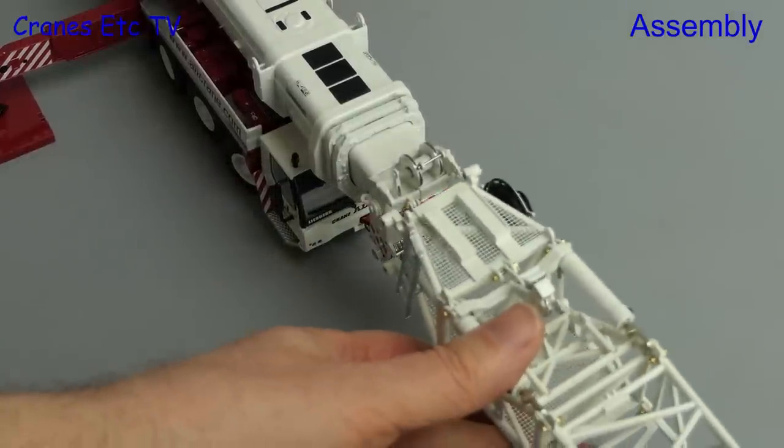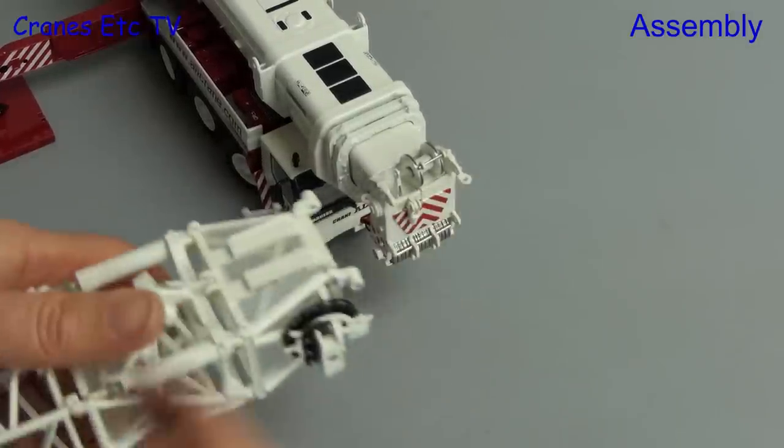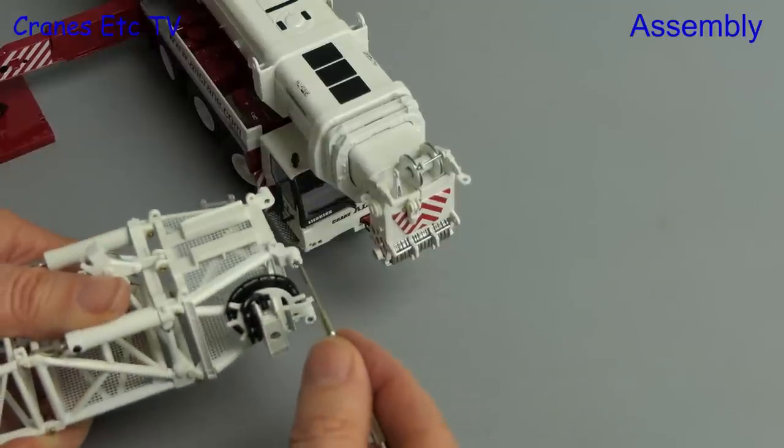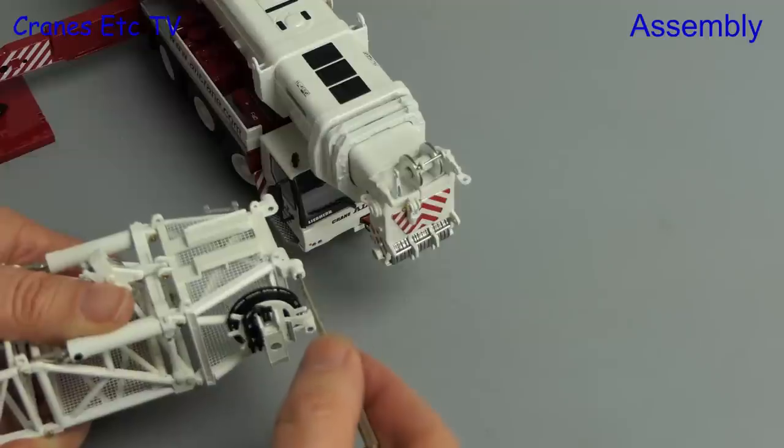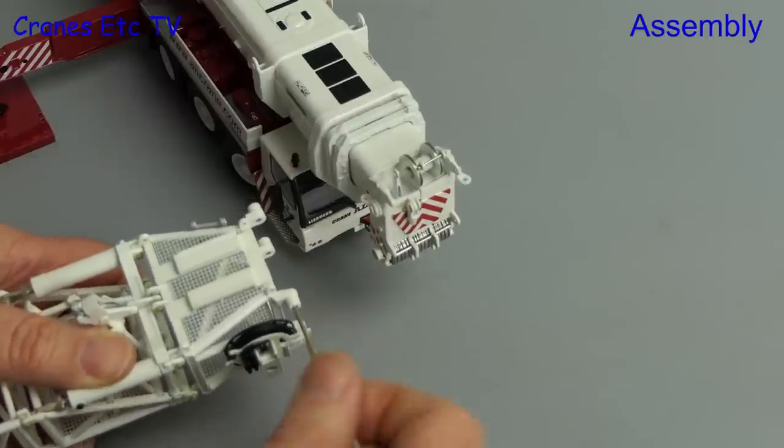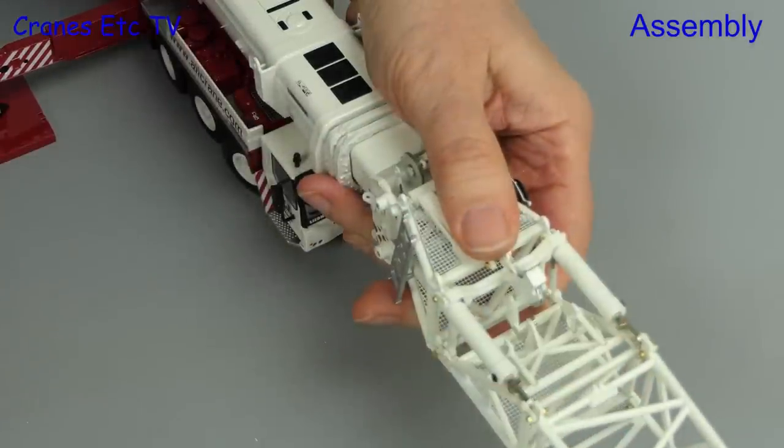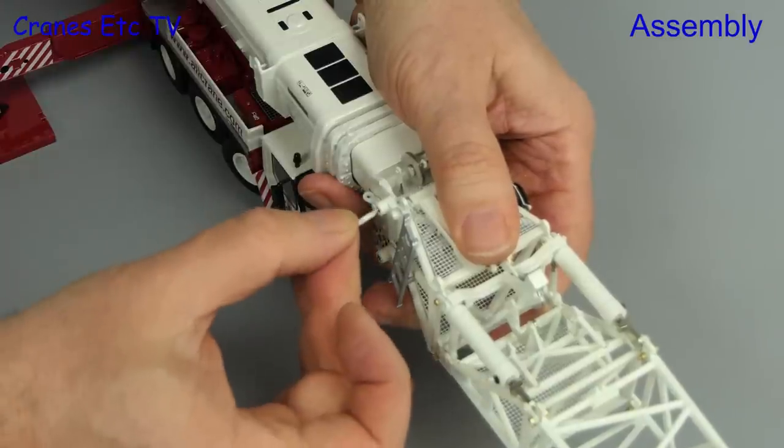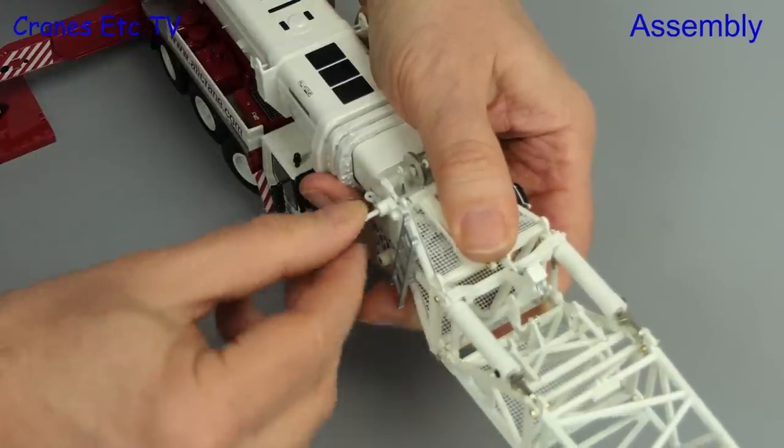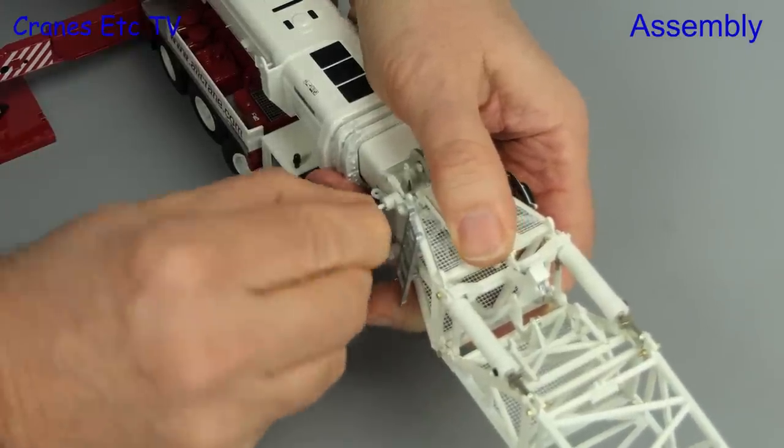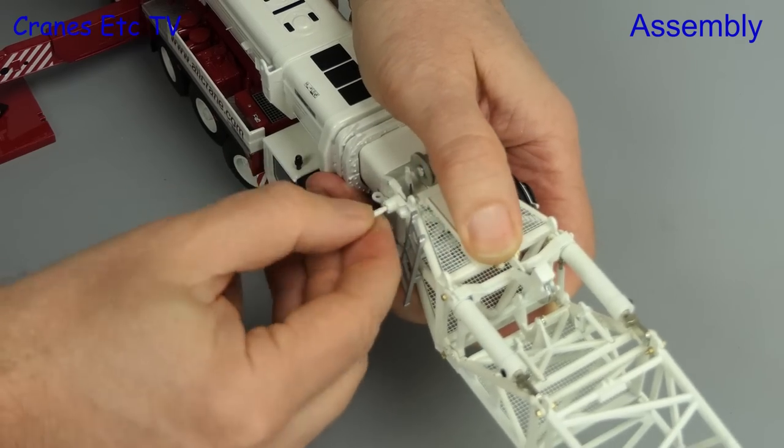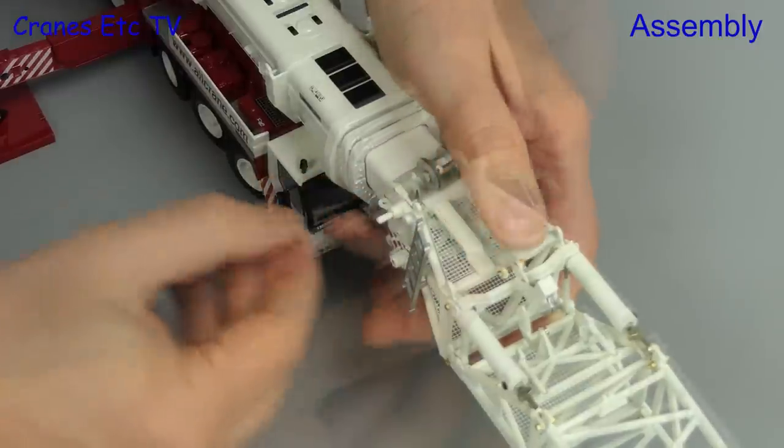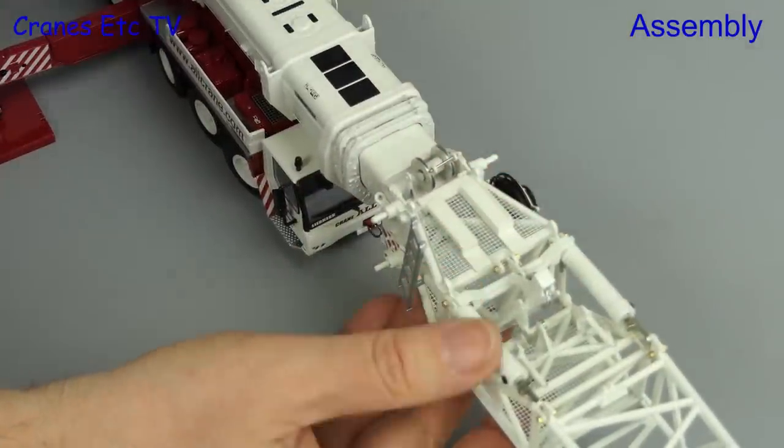Now we can attach the jib to the boom head. But on the review model it was necessary to scrape out the paint on the jib adapter connectors because the bolts were a very tight fit. With that done we use the giant hand cranes to hold the jib onto the boom head and then we slide in the bolts. This resembles the bolts used on the rail crane and it forms a decent connection.